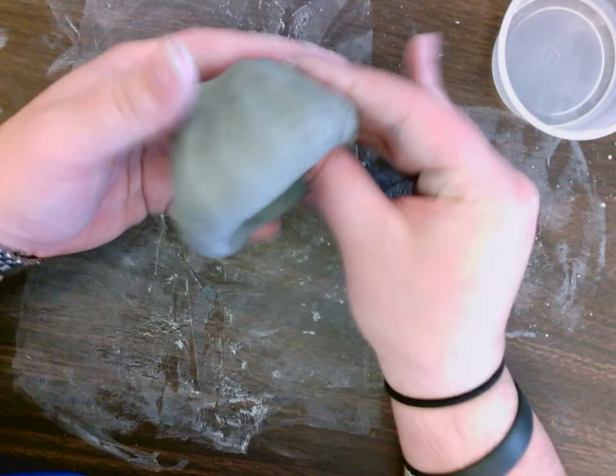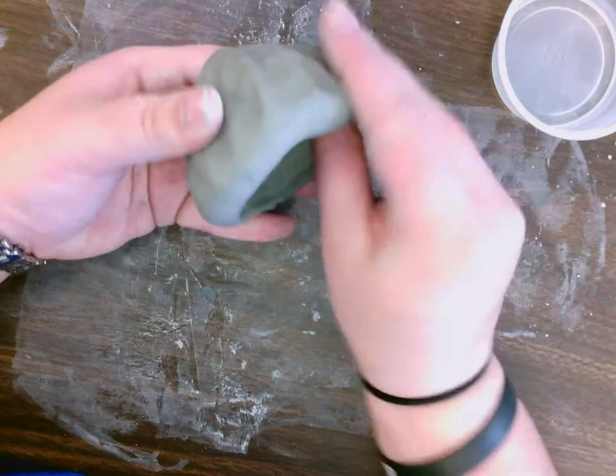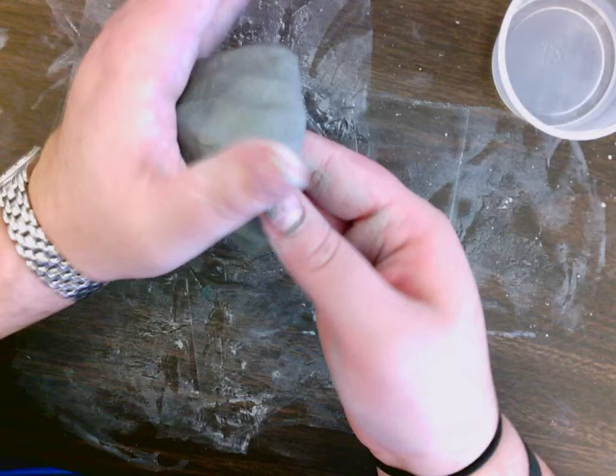And so our acorns are gonna have flat bottoms because they're gonna stick on a leaf. Okay, so now I'm gonna form my pinch pot shape.